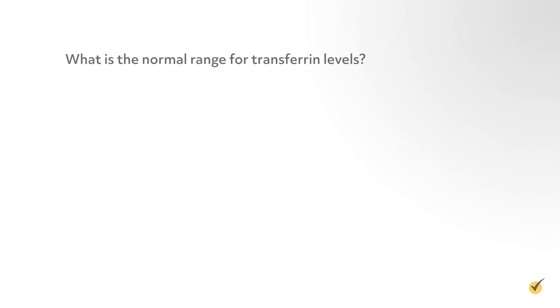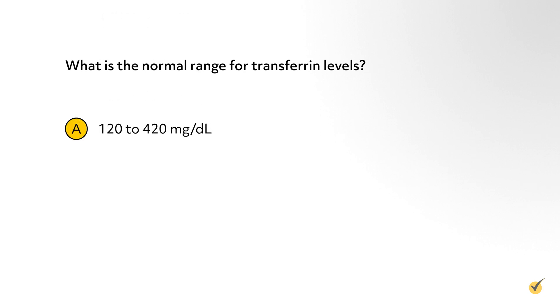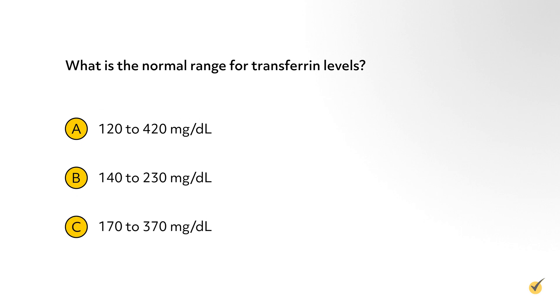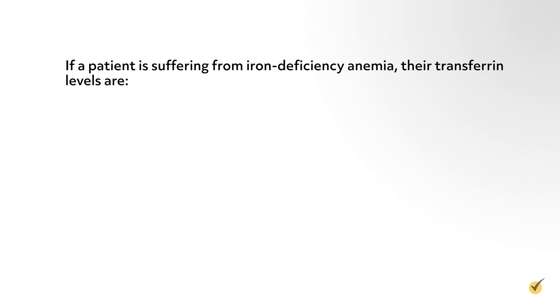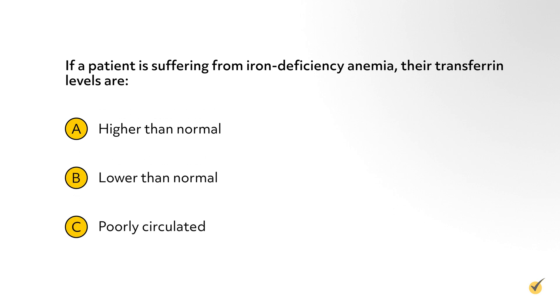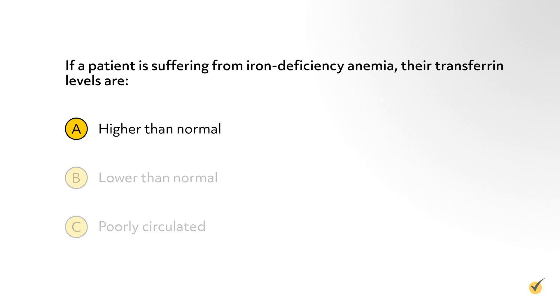Now let's go over a couple of review questions. Number one: what is the normal range for transferrin levels? A, 120 to 420 milligrams per deciliter; B, 140 to 230 milligrams per deciliter; or C, 170 to 370 milligrams per deciliter. The correct answer is C, 170 to 370 milligrams per deciliter. Number two: if a patient is suffering from iron deficiency anemia, their transferrin levels are A, higher than normal; B, lower than normal; or C, poorly circulated. The correct answer is A, higher than normal. That's all for this review. Thanks for watching and happy studying.